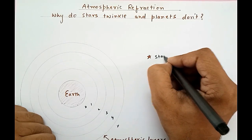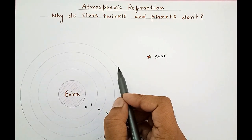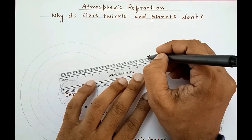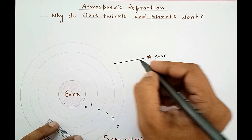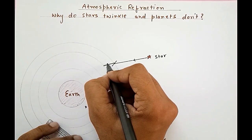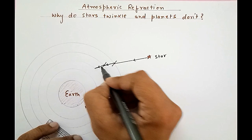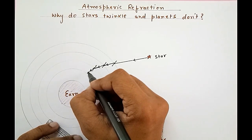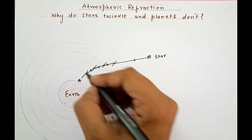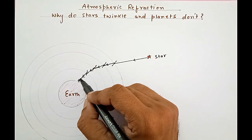Here we have a star. The light from the star has to pass through all the layers of the atmosphere to reach the earth. A ray of light falling from vacuum enters the first layer, and of course it bends slightly towards the normal. Then again from each successive layer it slightly bends towards the normal, and finally when it reaches the observer, the ray of light from the star keeps on bending and finally comes to the eye of the observer.